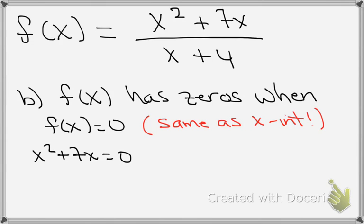We're going to set the numerator equal to zero, which is x squared plus 7x. We recognize there's a common x in that numerator, so we're going to factor that out, which is going to give us x times the factor x plus 7 equals zero.